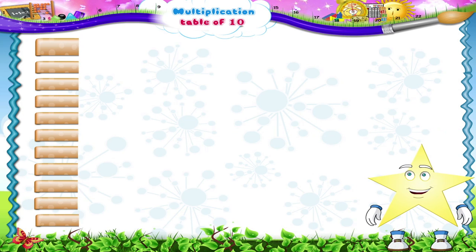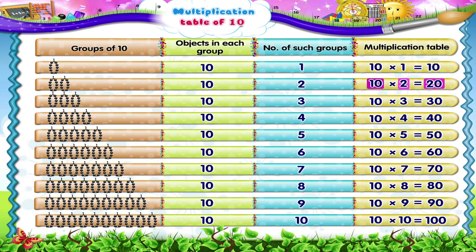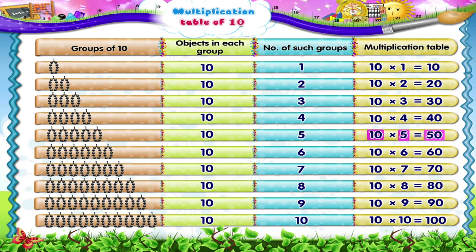Can you tell what is meant by 10 multiplied by one, Starry? It means a group of 10 taken once. 10 twos are 20 means a group of 10 taken twice. 10 threes are 30 means a group of 10 taken three times. 10 fours are 40 means a group of 10 taken four times. 10 fives are 50 means a group of 10 taken five times.